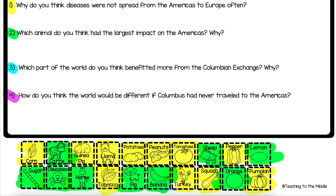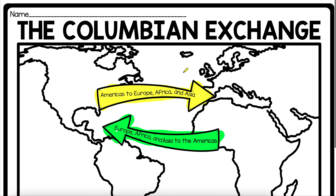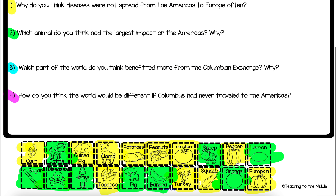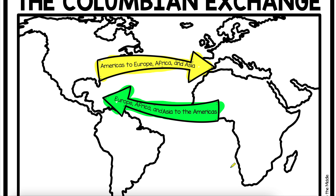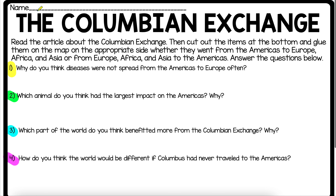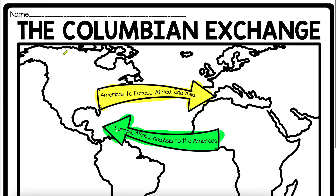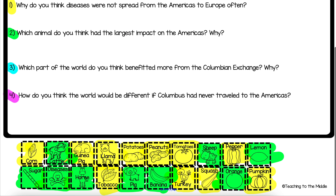Now here's what you're going to do: take your paper, cut these pieces out carefully along the dotted lines, and make sure you cut them out over your desk so they don't get lost. Go down to your map and all yellow-highlighted things — like corn, guinea pigs, and llamas — glue those above the arrow going from the Americas over to Europe. Anything highlighted green, coming from Europe, Africa, and Asia, goes below the green arrow on the map.